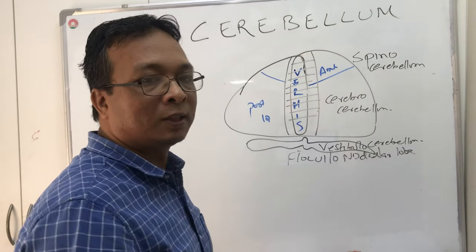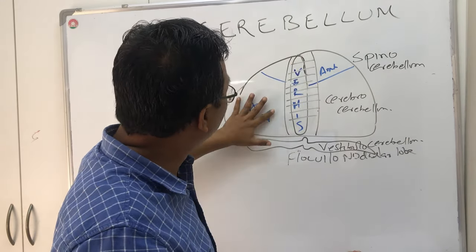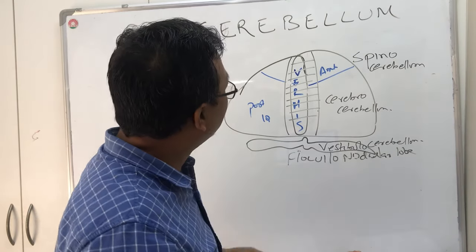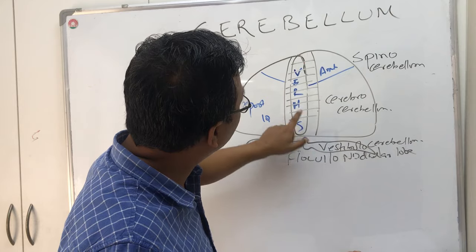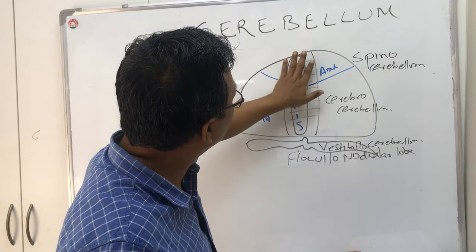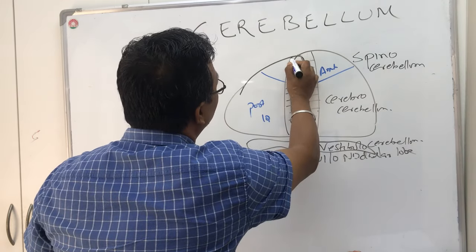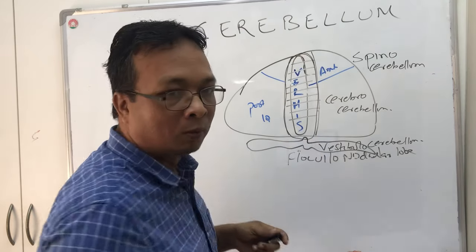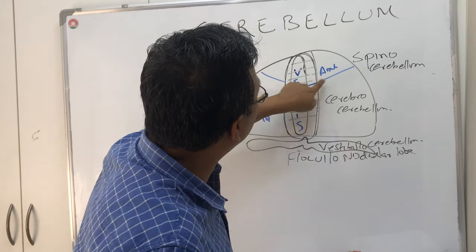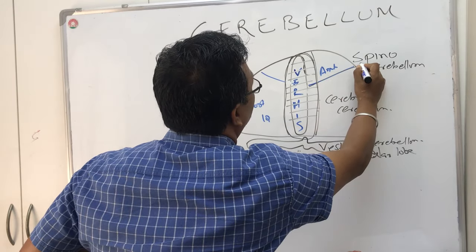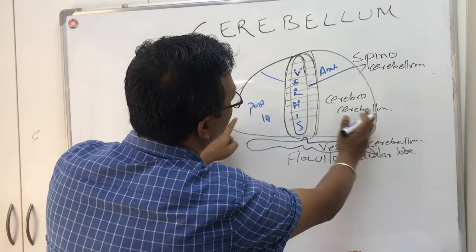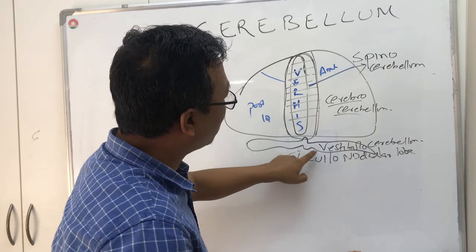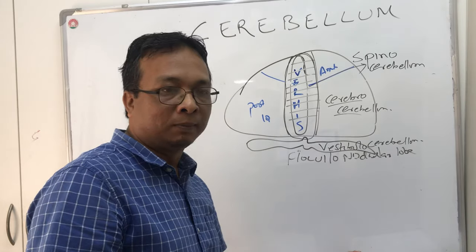So anatomically, the cerebellum is divided into three parts: anterior lobe, posterior lobe, and flocculonodular lobe. Functionally, the center part along with the vermis area - this worm-like vermis area - together forms the spinocerebellum. The surrounding part is called the cerebrocerebellum, and the downward flocculonodular lobe is called the vestibulocerebellum.